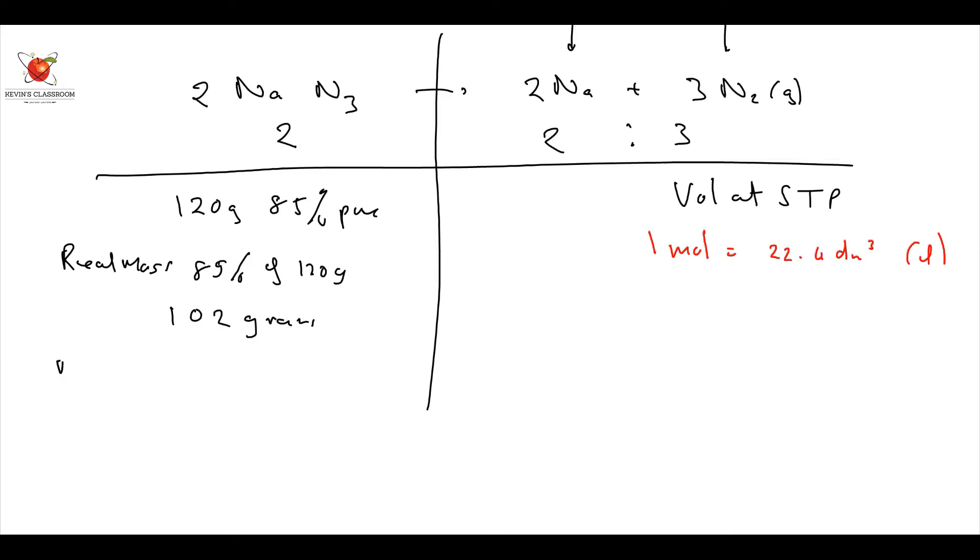So my next thing is I've been given mass, so I need molar mass. And I work it out. It's going to be equal to 23 plus 14 times 3. Which is going to be equal to 65 grams per mole. So therefore, I know my molar mass.